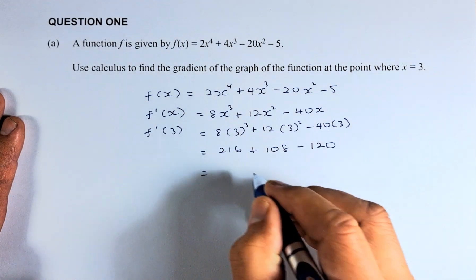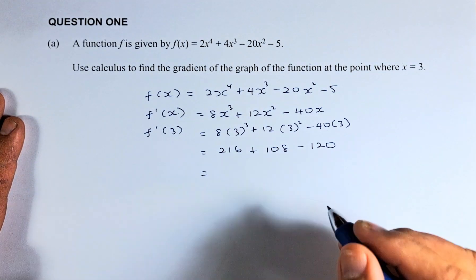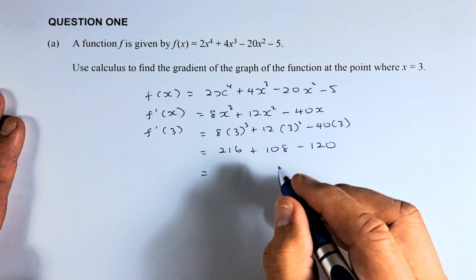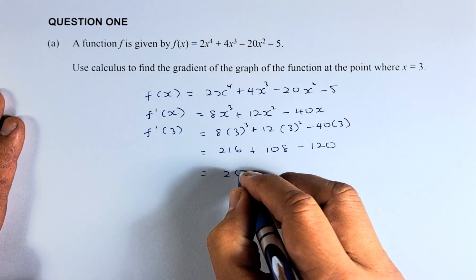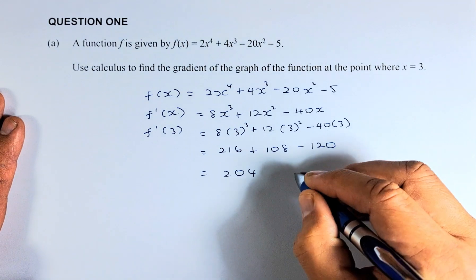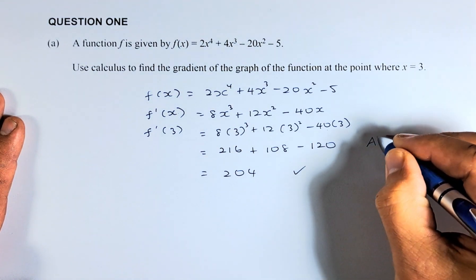Now you have to use the calculator. 216 plus 108 and then you're going to minus 120. And the answer should come up to 204. So that is the answer. And get it right, that's an achieve for this paper.